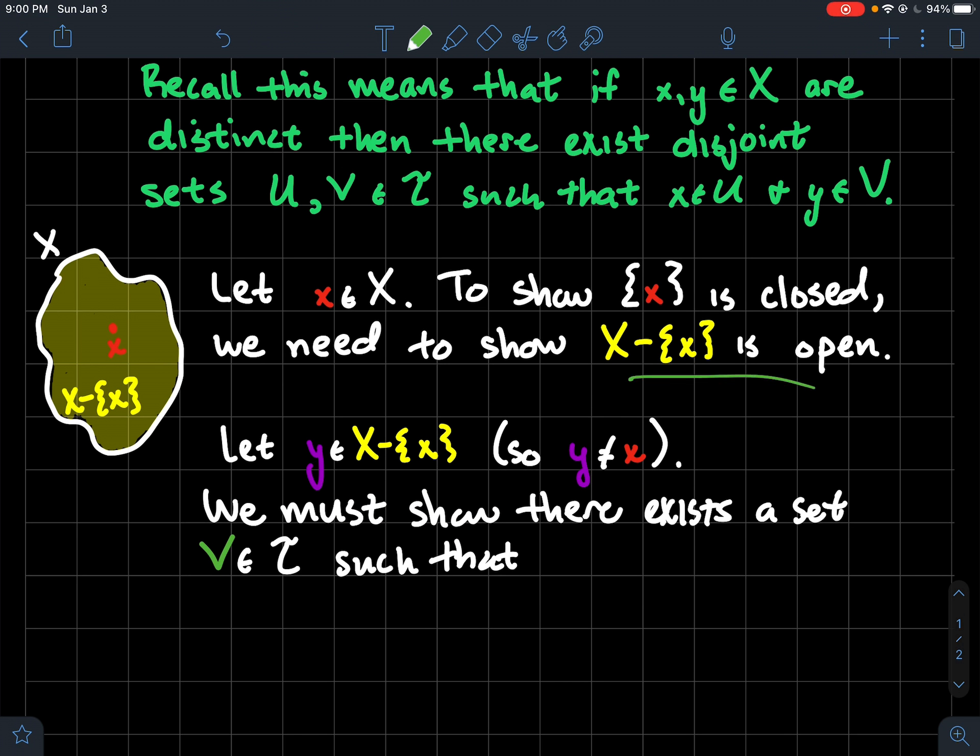So what do we need to do in order to show that this yellow set is open? Recall that that means that we need to show that there exists an open set V, so V is in the topology, such that y is in V and V is completely contained in the yellow set X minus {x}.